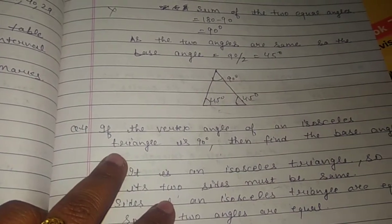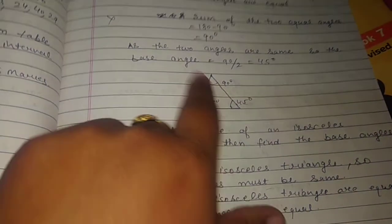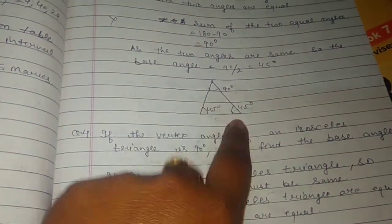If the vertex angle of an isosceles triangle is 90 degrees, then find the base angle. Now, if the vertex angle is 90 degrees, then we have to find the base angle.